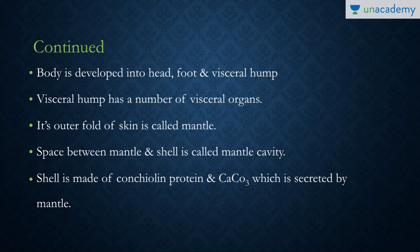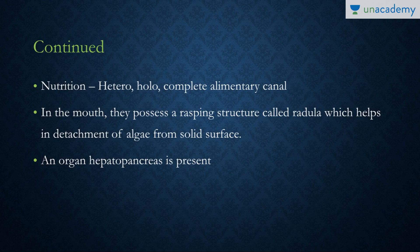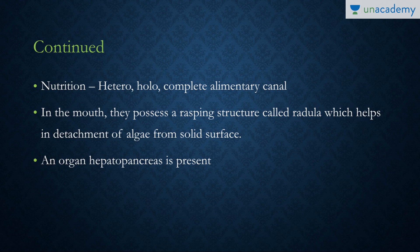They have a complete alimentary canal with a mouth and an anus. They are heterotrophic and holotrophic, meaning they ingest whole food rather than filter feeding. They also have a rasping structure known as the radula, which helps in detachment of algae from solid surfaces and is present inside the mouth, aiding in capturing prey. They also have a distinct organ, the hepatopancreas.